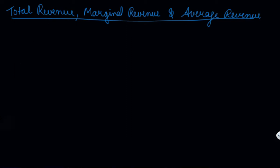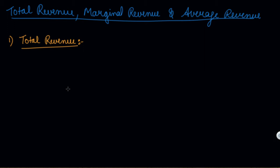In this video, let us understand what is your total revenue, marginal revenue and average revenue. The revenue that a firm gets by selling a given output is total revenue.